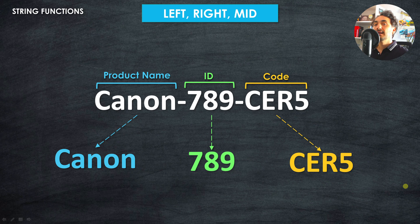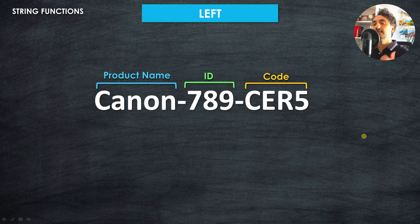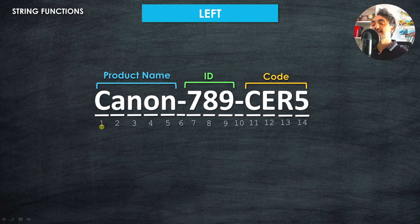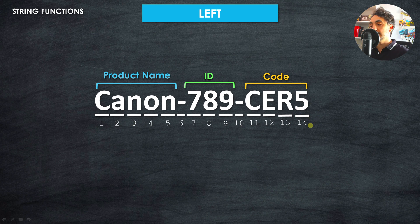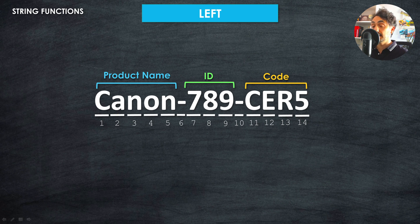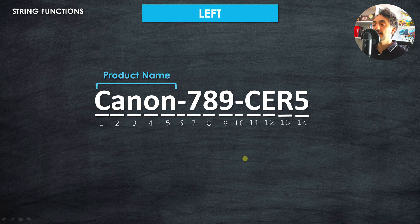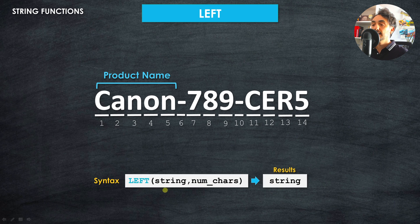Let's start with the LEFT function. The first thing to understand is that each character in a string has a position number. For example, 'C' has position 1, 'A' position 2, 'N' position 3, and so on until the last character which has position 14. We count from the left moving to the right. In this example we're interested in the product name, which ends at position 5.